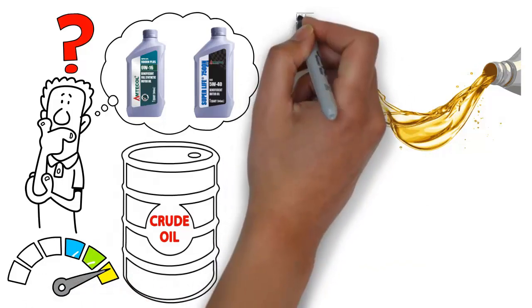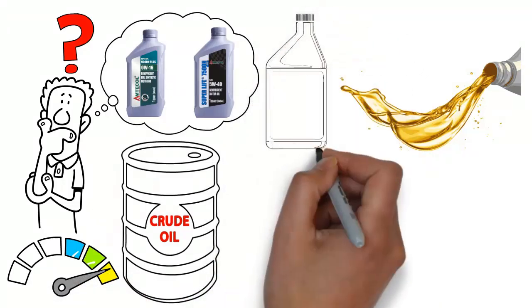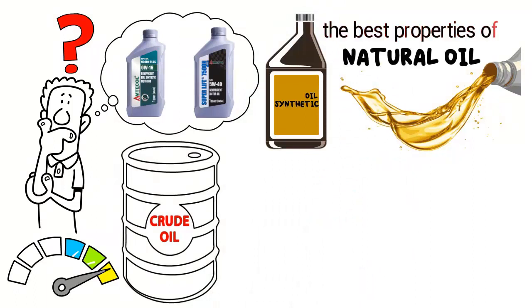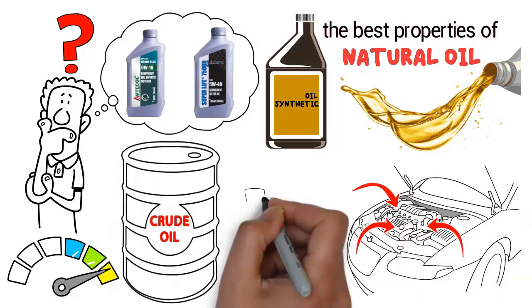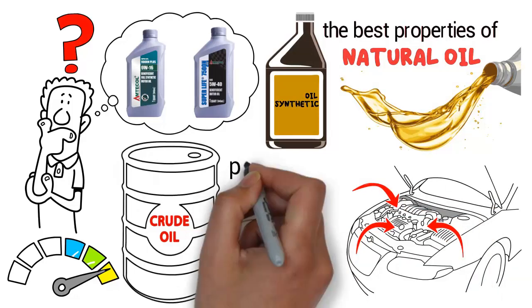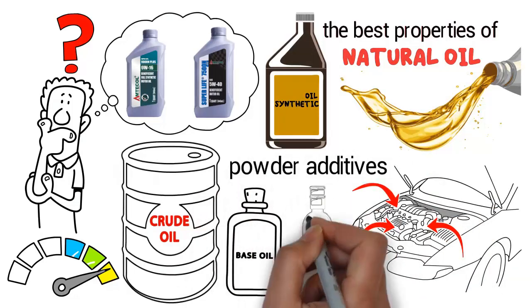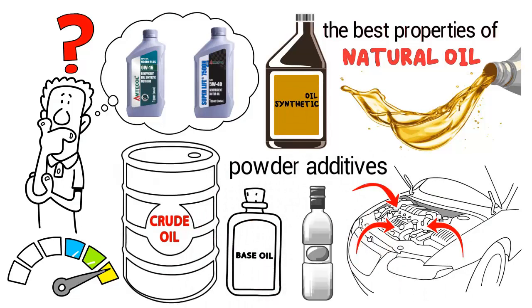Synthetic oil is created artificially from chemical compounds with the goal of mimicking the best properties of natural oil and tailoring to the specific demands of modern vehicle engines. It's made from base oil, powder additives, and a carrier oil that enforces an even distribution of the additives.